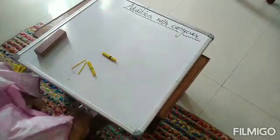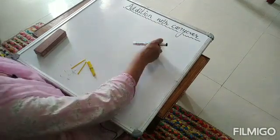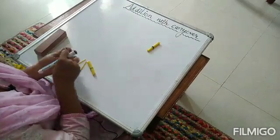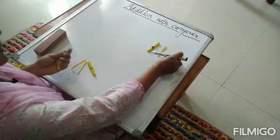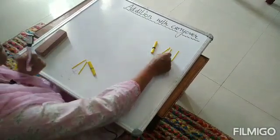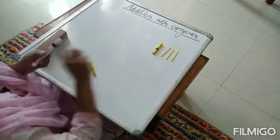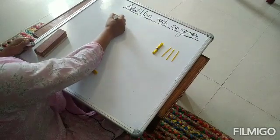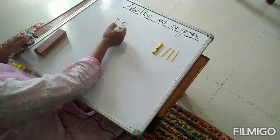Let's say we have 13 sticks. One bundle of 10 and 3 loose sticks: 1, 2, 3. So 10 sticks are there in this bundle and there are 3 sticks here. That means it makes 13.